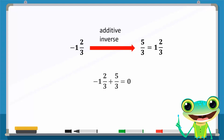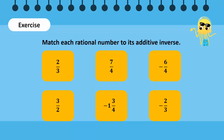We can check this by adding the two numbers. Now let us do a quick exercise — take a minute to match each rational number to its correct additive inverse.